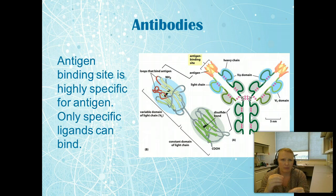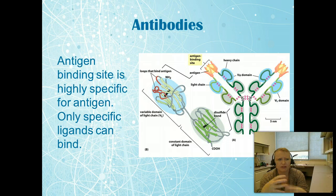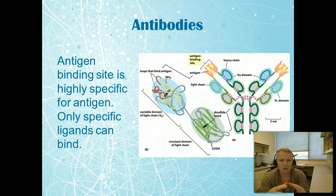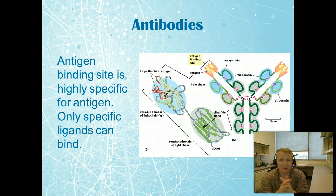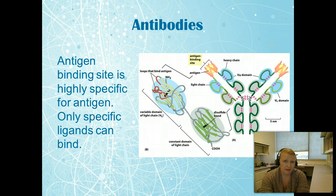We use the specificity of antibodies to our advantage in the lab, attaching light sensors or HRP to detect proteins on western blots. The distinct binding site is what makes an antibody specific for a particular antigen — to the point where even different versions of flu viruses, depending on how different they are, may not be recognized by the same antibody.